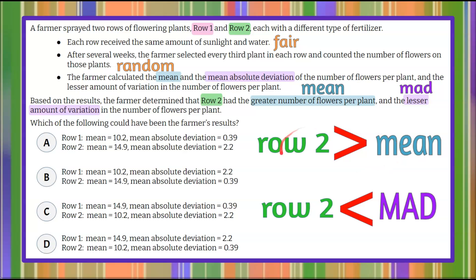Let's look at the mean first. We're going to look at the mean for each one of our answer choices, and row two needs to have the greater mean value. Row two here is greater than row one. Row two greater than row one. Row two has a lesser average here, so we're going to eliminate answer choice C. And row two here also has an average that's less, so we can eliminate choices C and D just based on the fact that row two has to have a greater mean or average per plant.